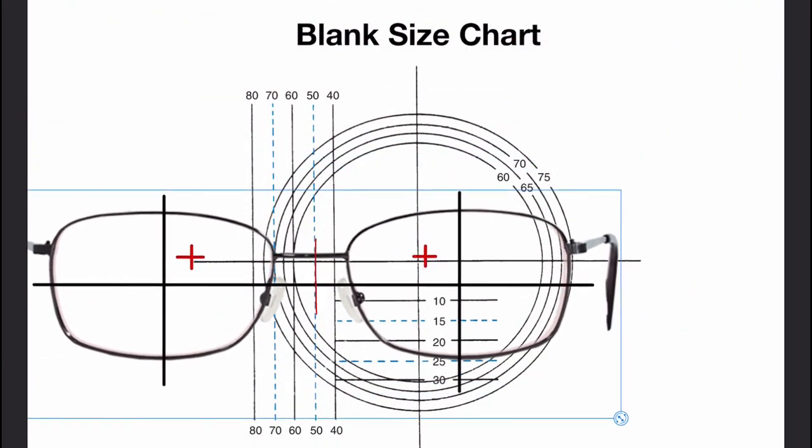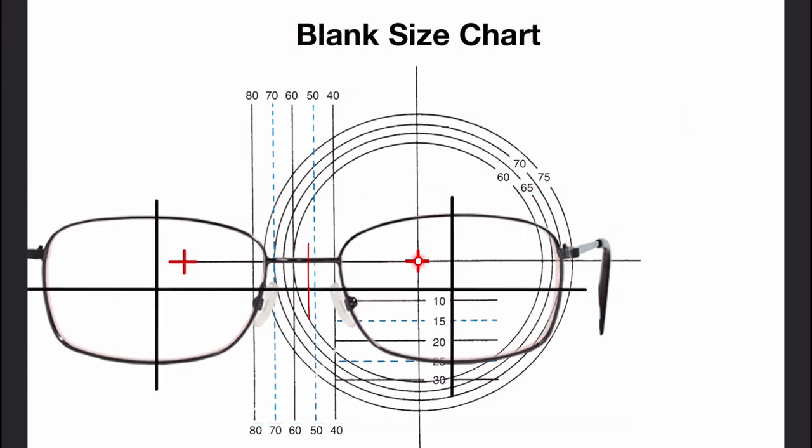Now, the frame is aligned with the fitting point on the chart. Before the diameter is selected, you want to make sure that the center of the bridge is aligned with the patient's PD, and the bottom of the frame is aligned at the fitting height. If the patient's fitting point wasn't marked on the lens, we would use these lines to align the fitting point in the same way.